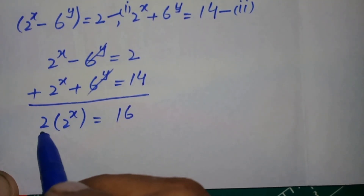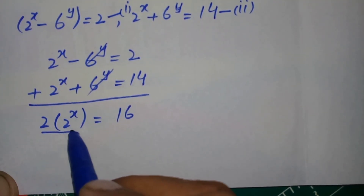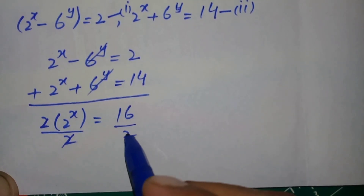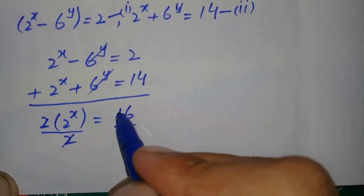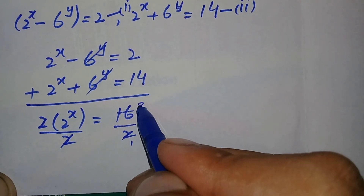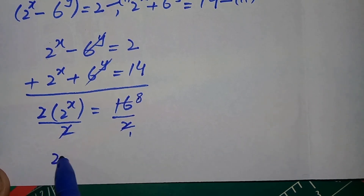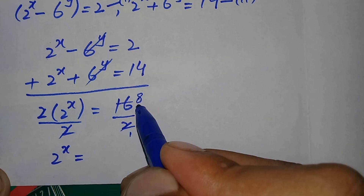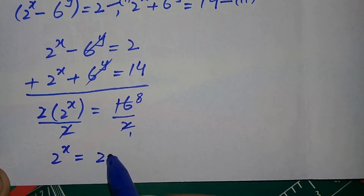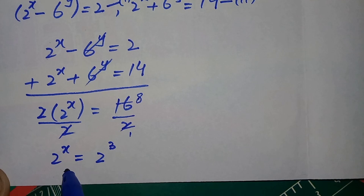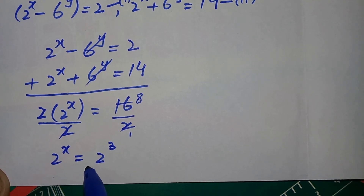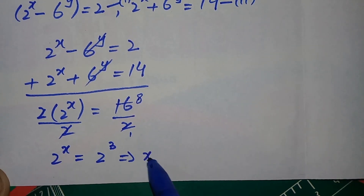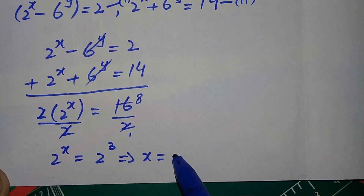To find the value of x, we divide both sides by 2. So 2 raised to power x equals 8. We know that 8 can also be written as 2 raised to power 3. Since the bases are the same, we compare the powers, which gives us the value of x equal to 3.